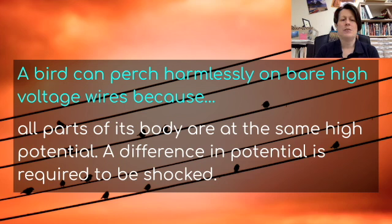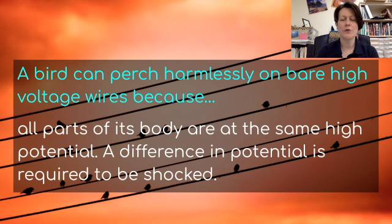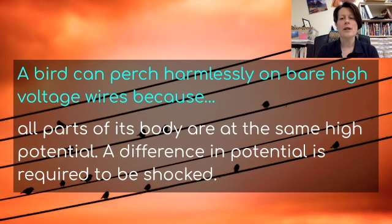Why don't birds get shocked when perched on wires? A bird can perch harmlessly on bare high-voltage wires because all parts of its body are at the same high potential. A difference in potential is required to receive a shock. Every spot on that wire is at the same voltage, so they are not shocked. However, if they were to touch another wire next to it or touch the pole — which is connected to the ground at zero voltage — there would be a difference in potential, current would cross their body, and that would kill them.